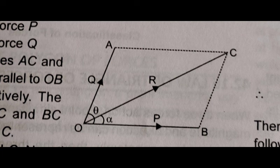The point of intersection is labeled O. The two sides are O-A and O-B.